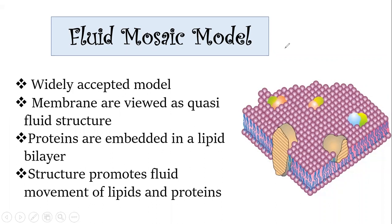Let's get started with the special features of the fluid mosaic model. Since it was discovered by Singer and Nicholson, it is a widely accepted model followed worldwide. In this model, membranes are viewed as a quasi-fluid-like structure. Quasi means that different kinds of biomolecules are arranged together, and their arrangement promotes flexibility in plasma membrane movement.